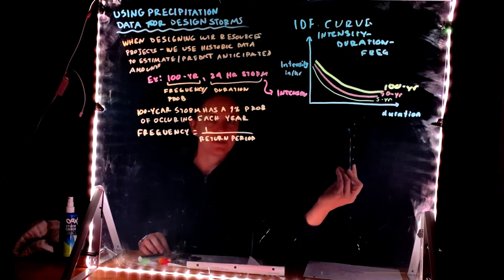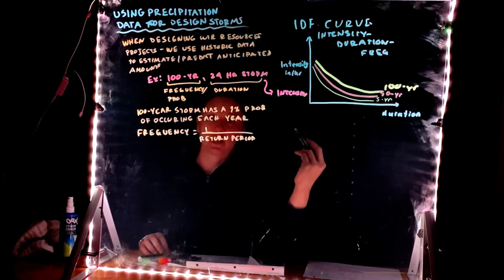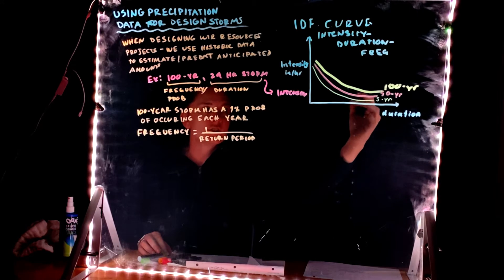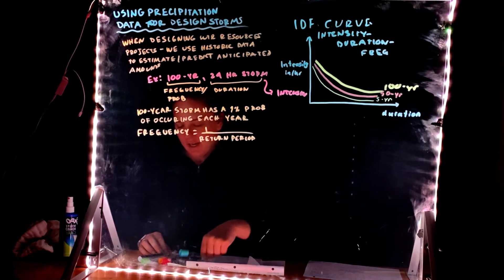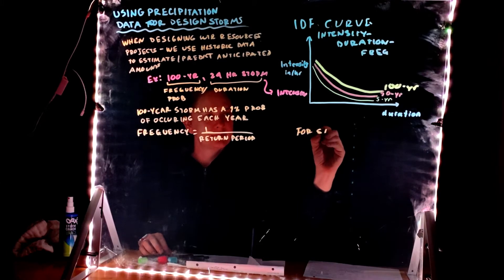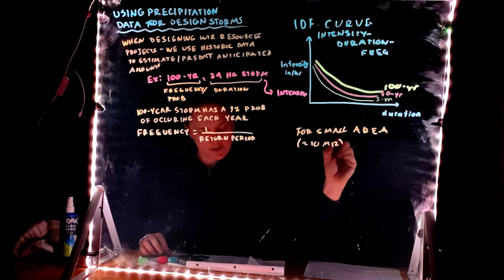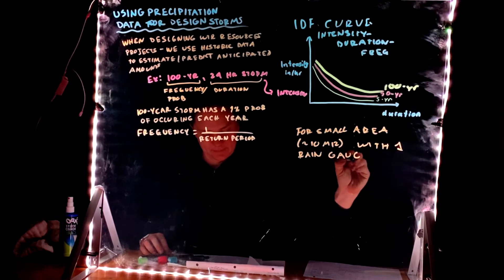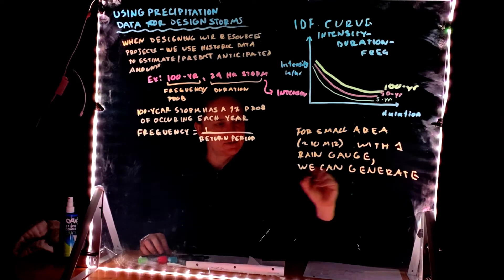So if you have a 24-hour storm, usually that means that it's not very intense for that entire time, right? Which is different than if you have a five-minute storm. It's pretty intense, meaning a lot of rainfall in the shorter period of time. But as you decrease your frequency or increase your return period, you're going to increase that intensity. So I would expect that a 100-year storm of duration 24 hours is going to give you a greater value than a 50-year storm. And for small areas, approximately 10 square miles, we can, with one gauge, with one ring gauge, we can generate these IDF curves. And I'm going to show you how to do that.